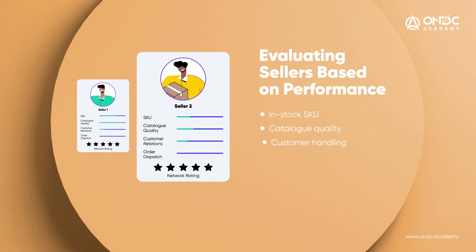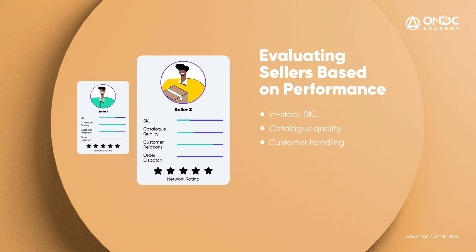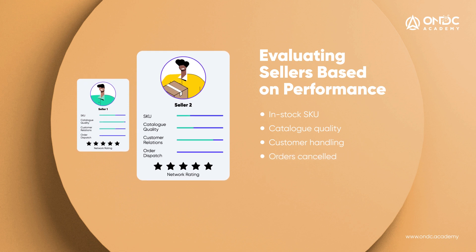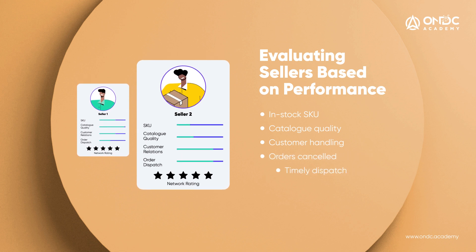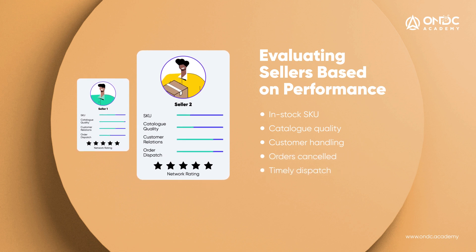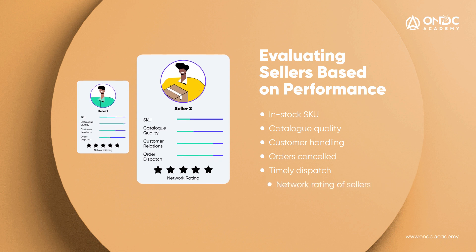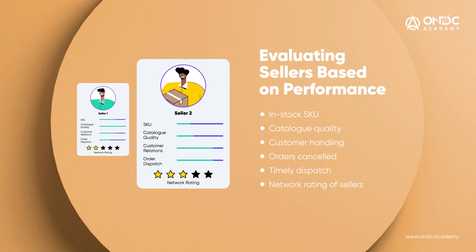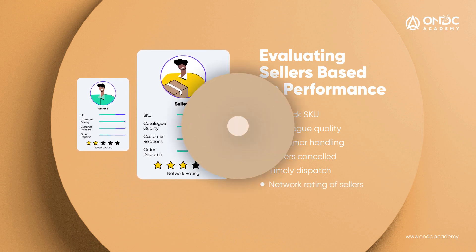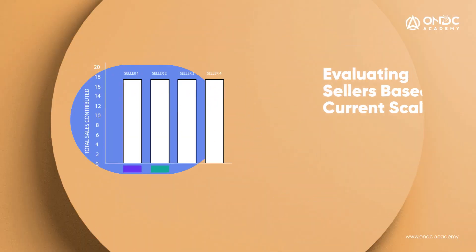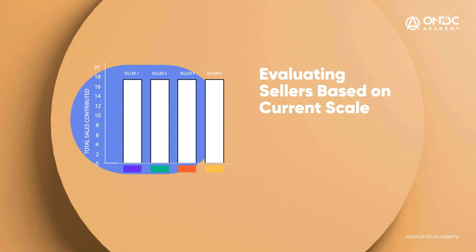they handle their customers, and whether their orders are being cancelled or dispatched on time. There will also be a network rating for each seller to refer to. For evaluating and classifying sellers based on current scale, we can look at the size of their sales contribution.